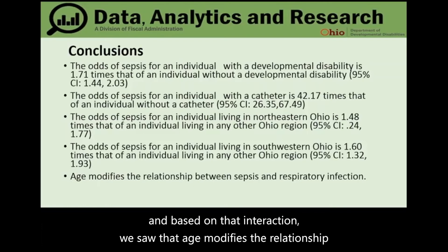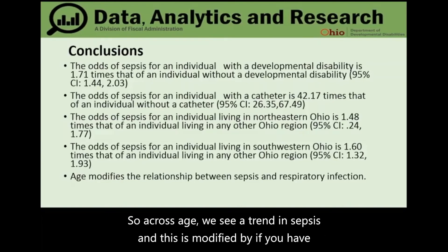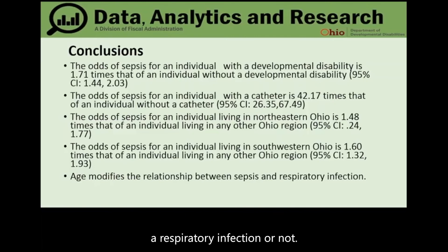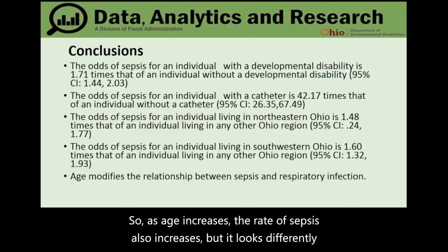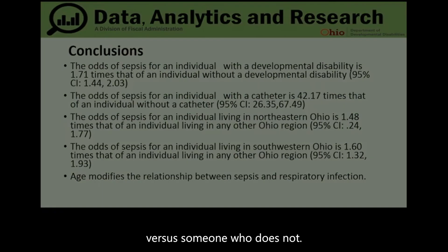Based on the interaction term, age modifies the relationship between sepsis and respiratory infection. Across age, there is a trend in sepsis rates that looks differently depending on whether someone has a respiratory infection such as pneumonia versus someone who does not. As age increases, the rate of sepsis also increases.